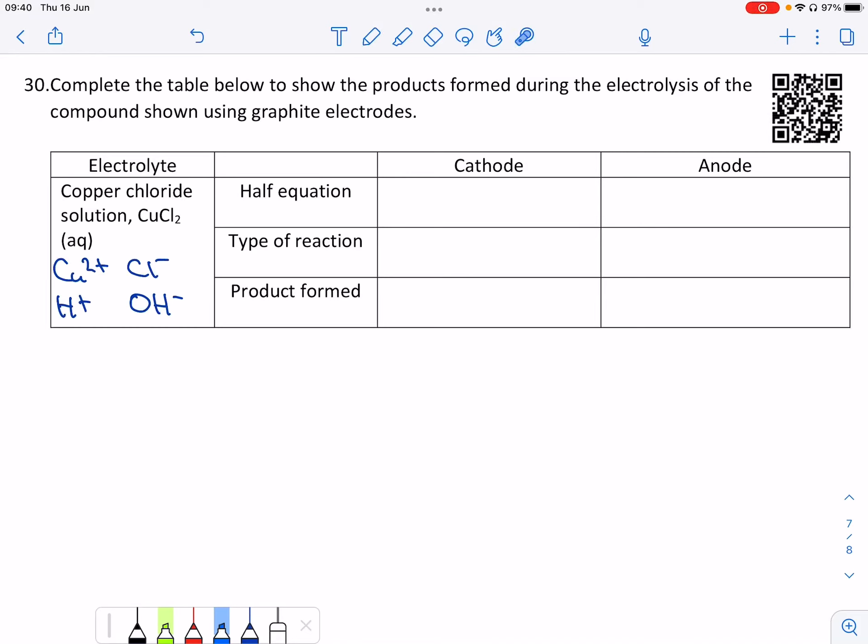The first step is to look at the electrolyte, which is copper chloride, but it's aqueous. So copper chloride will contain copper ions and chloride ions. The fact it's aqueous means it's dissolved in water, so there will also be H+ and OH- ions.